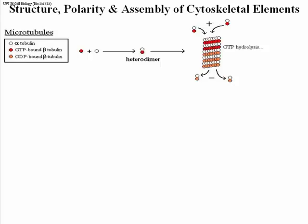Soon after you establish several rows of these heterodimers in a microtubule, the GTP is hydrolyzed. Most of the length of the microtubule consists of alpha-GDP beta-tubulin heterodimers. By far the longest component of a microtubule is bound with GDP, not GTP.